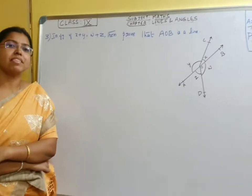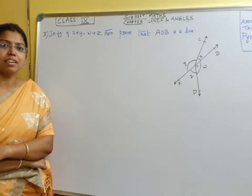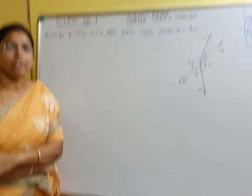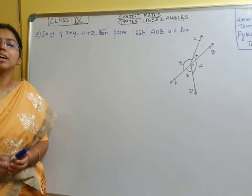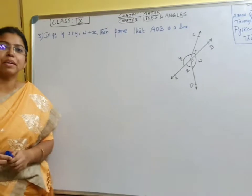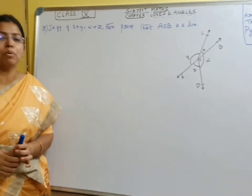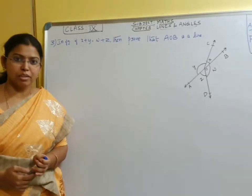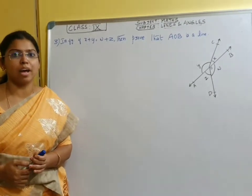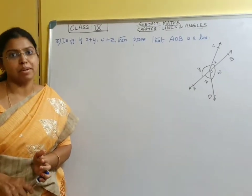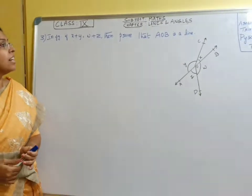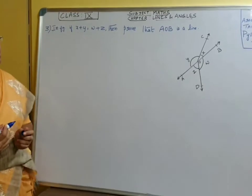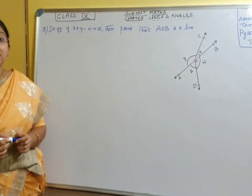Hello children. In the previous session we were discussing lines and angles, so we will continue with that. Before getting into the session, I want you all to maintain a 100 or 200 page unruled book for both maths and science. Take down the running notes as we go through the videos, as well as the notes that will be sent through the app, and complete the assignments. We will go to the problems we were solving in the previous session on linear pair axiom.